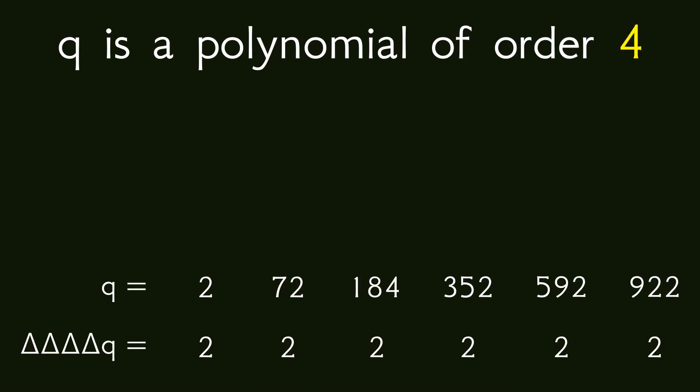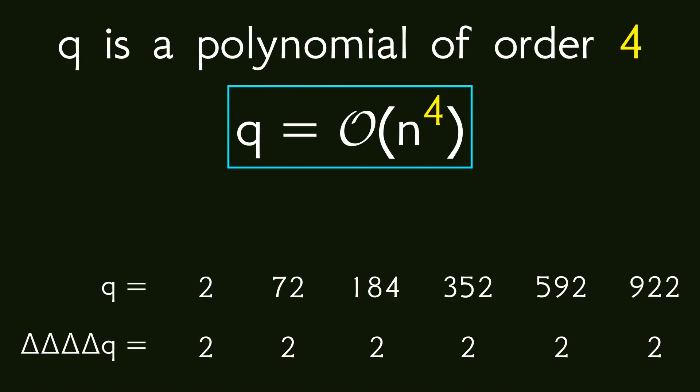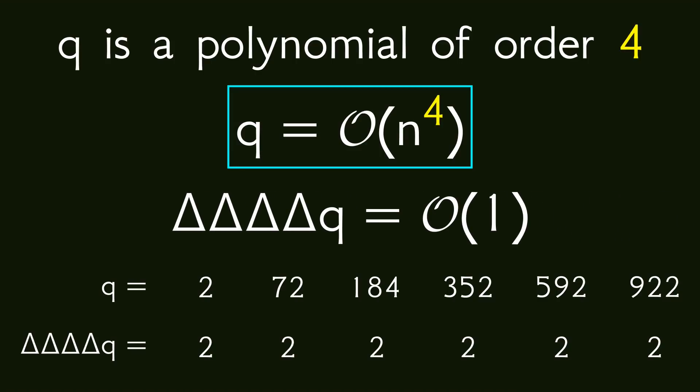Saying polynomial of order four is quite a mouthful and it's even more annoying to write, which is a reason to use big O notation. In big O notation, sequences of polynomial growth are written as O of n to some power, where the power is the order of the polynomial. As a special case, a constant sequence is written as O of 1, regardless of what the value of the constant sequence is, because big O notation doesn't care about particular values but only how the sequence grows as a whole.